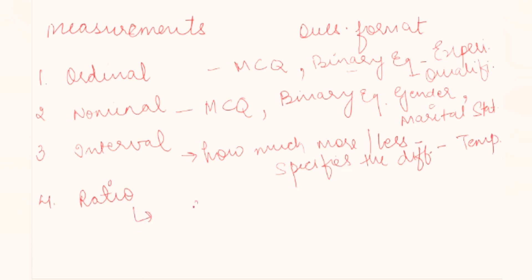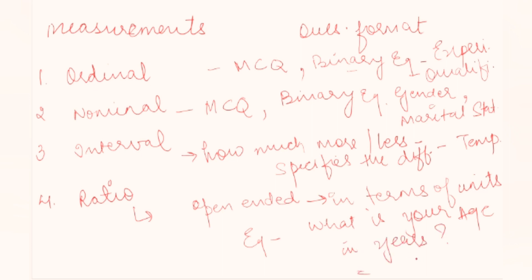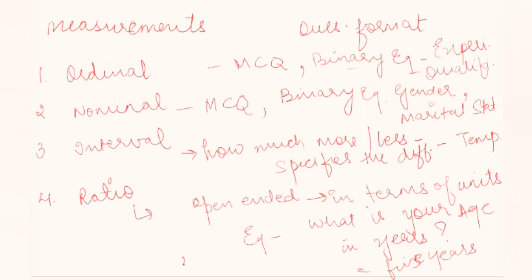Ratio. It can be open ended in terms of units. Example: what is your age in years, five years. How much you bought in kilograms. So these are kind of open ended questions which is termed as ratio. I hope the measurements and the question formats are very much clear to you.